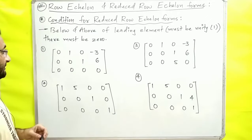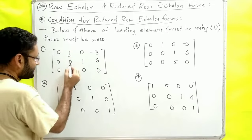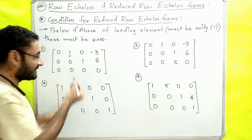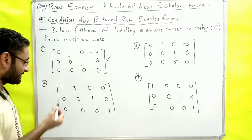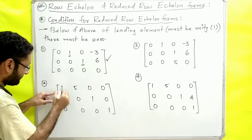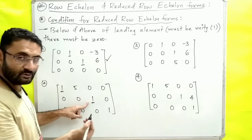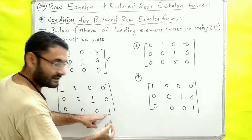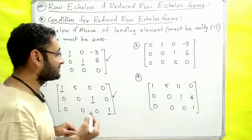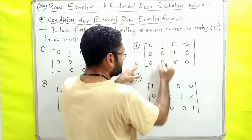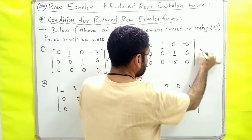Let's take an example. For the first matrix, how do we check it? The leading element should be 1, and above and below it should be 0. Checking: the leading element is 1. The next row's leading element goes to 1. The next row is 0, yes the next row is 0. Third row is 0 — yes, we have 0. Going further to check: the leading element is 0 in the first row, and the second row is also 0 — so this one is not reduced row echelon form.